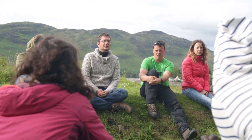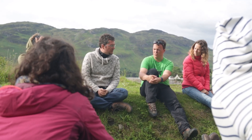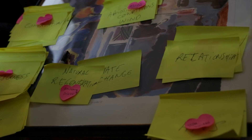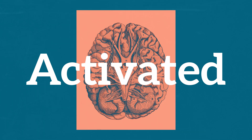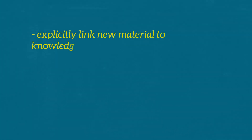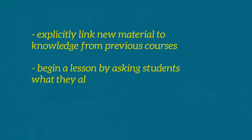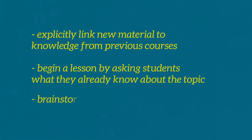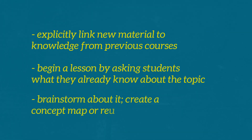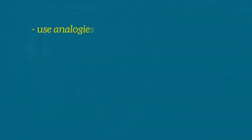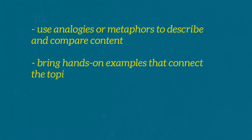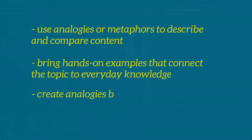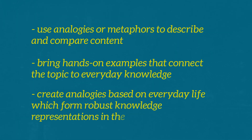We know that students learn most effectively if they connect new knowledge with prior knowledge, and you as a teacher are responsible for bringing that about. To access prior knowledge, which may be hibernating somewhere in a compartment in a student's brain, it has to be activated. Explicitly link new material to knowledge from previous courses. Begin a lesson by asking students what they already know about the topic — brainstorm, create a concept map, or reuse old slides. Use analogies or metaphors to describe and compare content. Bring hands-on examples that connect the topic to everyday knowledge, forming robust knowledge representations in the mind.